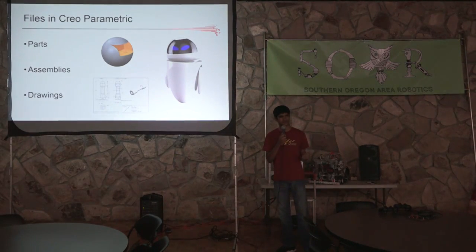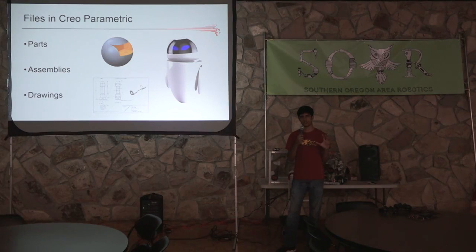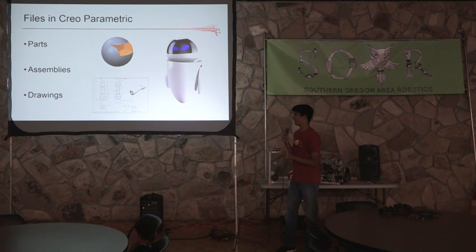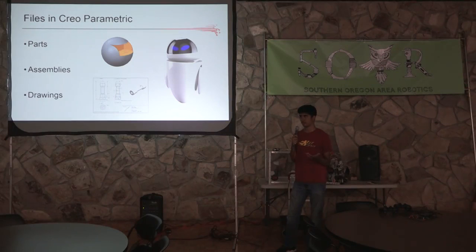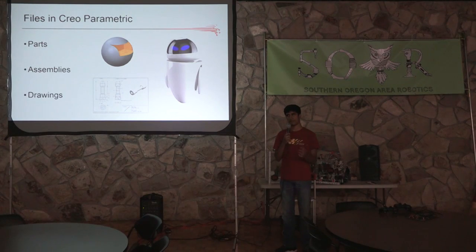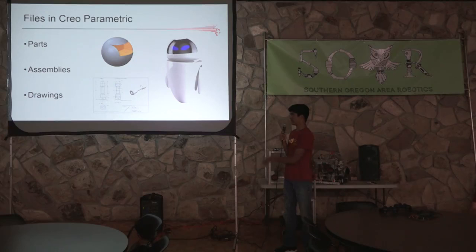There are three basic types of files in Creo Parametric. There's parts, which is the most basic — just a simple channel or wheel, for example. Assemblies are when you put the parts together and have them interact in certain ways, so your whole robot would be an assembly with multiple sub-assemblies. And then there are drawings, which are really useful for highlighting certain features and giving a blueprint format of the part.